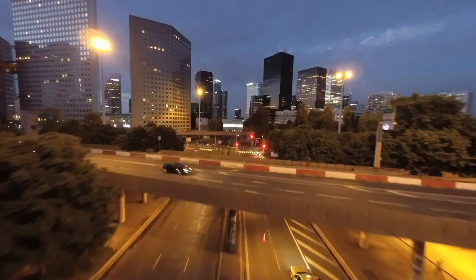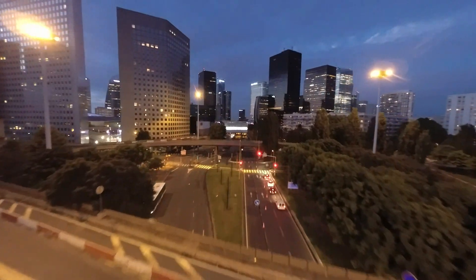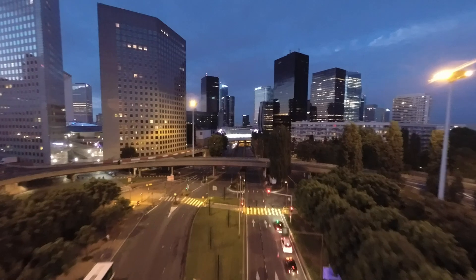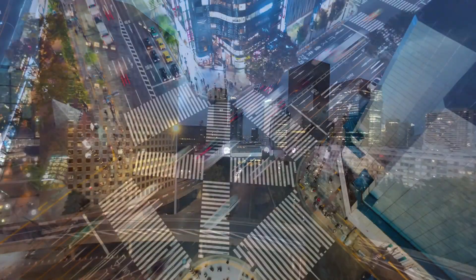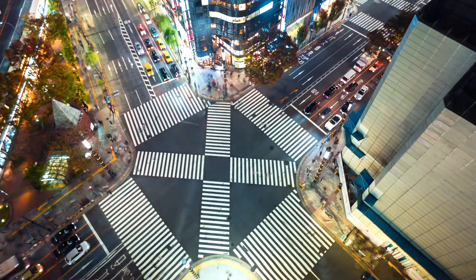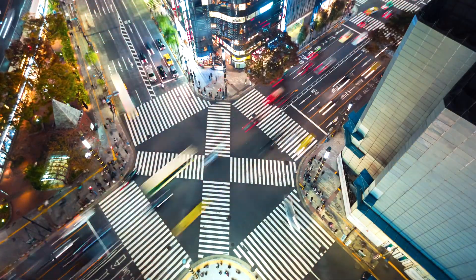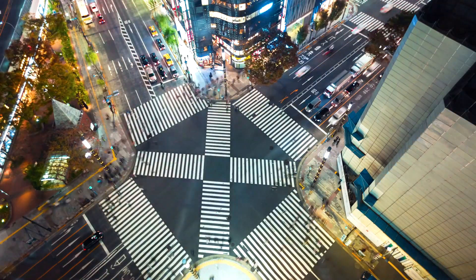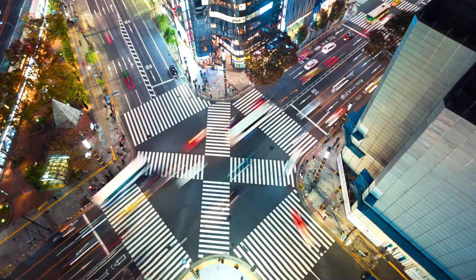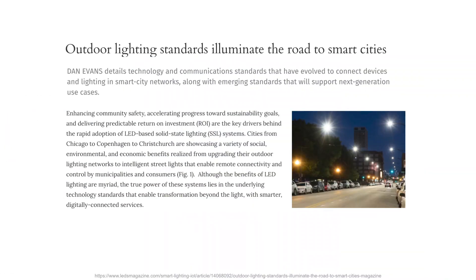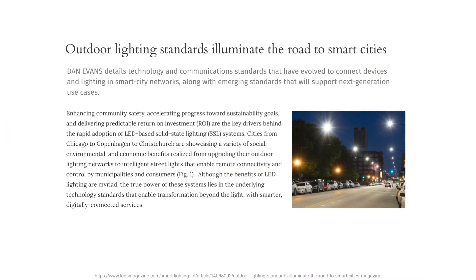For example, smart lighting helps to save energy and therefore money while helping pedestrians and drivers feel safer. Smart lights have a variety of sensors including motion sensors that enable them to turn on only when they detect a pedestrian or a vehicle, or they can adjust their brightness according to the amount of sunlight. Many cities around the world have incorporated smart lighting and many more are recognizing the benefits and are launching their own smart lighting initiatives.